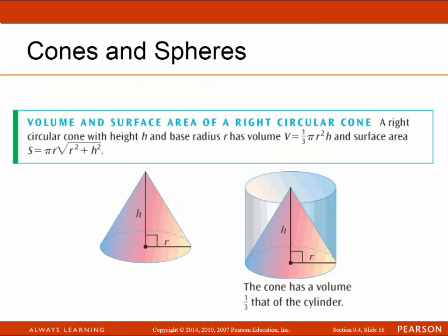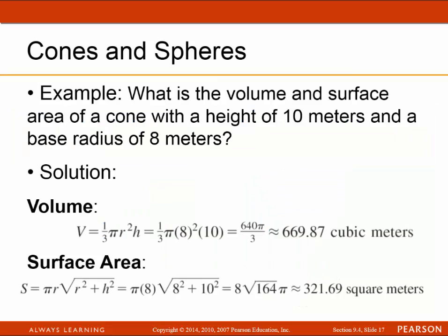Now, cones and spheres. A right circular cone with height H and base radius R has a volume of one-third pi R squared H and a surface area of pi R times the square root of R squared plus H squared. A cone has a volume one-third that of a cylinder, as shown in the diagram. For example, a cone with height 10 meters and base radius 8 meters has a volume of 669.87 cubic meters and a surface area of 321.69 square meters.